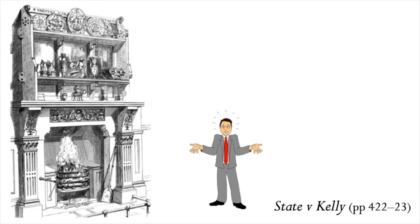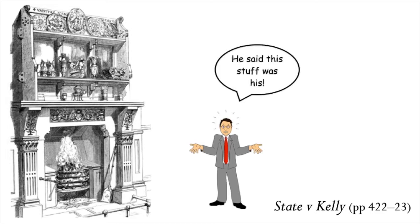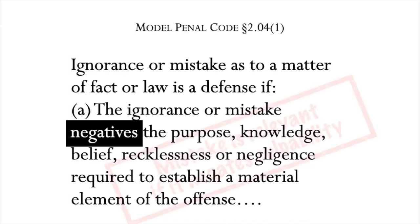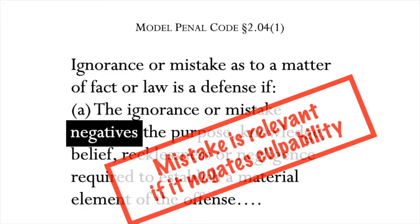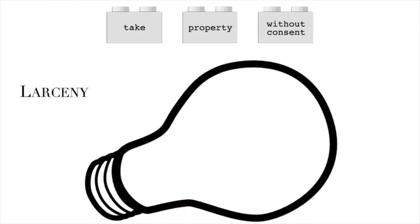She complained, and Kelly was charged with larceny of the mantelpieces. In his defense, Kelly testified that Mr. Bradley had represented to him that the houses and contents were his and his alone. Recall that the Model Penal Code tells us mistake is always relevant where it tends to negate the culpability required to establish any material element of the offense. The offense is larceny; the material elements are taking another's property without proper consent.